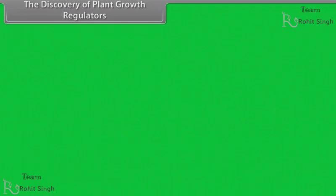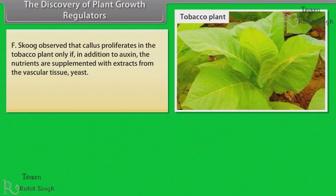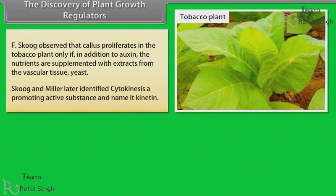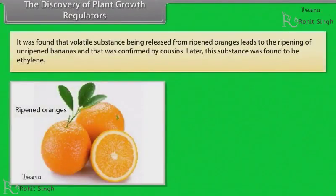F. Skoog observed that callus proliferates in the tobacco plant only if, in addition to auxin, the nutrients are supplemented with extracts from the vascular tissue or yeast. Skoog and Miller later identified a promoting active substance and named it kinetin. Three independent workers reported three different kinds of inhibitors in plants — inhibitor B, abscission-2, and dormin — and later all three proved to be chemically identical, named abscisic acid (ABA). It was found that a volatile substance released from ripened oranges leads to the ripening of unripened bananas, confirmed by Cousins; this substance was later found to be ethylene.